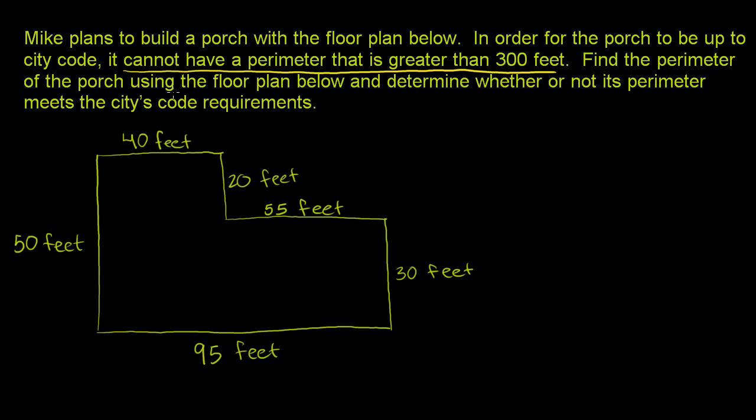Find the perimeter of the porch using the floor plan below and determine whether or not its perimeter meets the city's code requirements. So we need to find the perimeter of this porch. Just as a reminder, the perimeter is the distance around the object, or the sum of the lengths of the sides. So to find the perimeter, we just have to add up these lengths of the different sides.